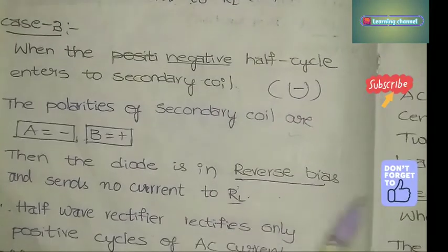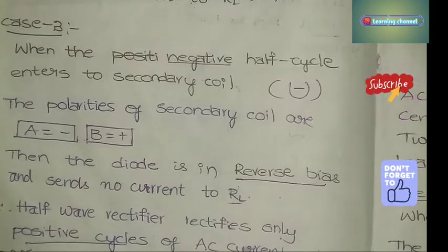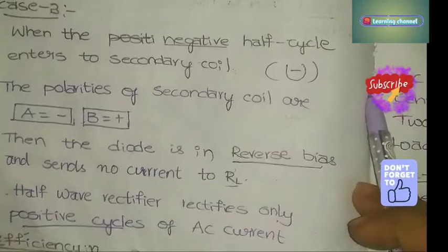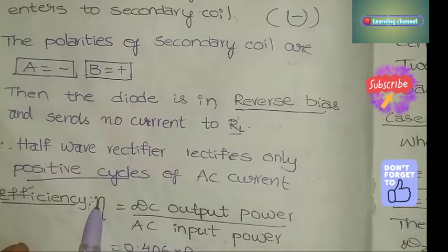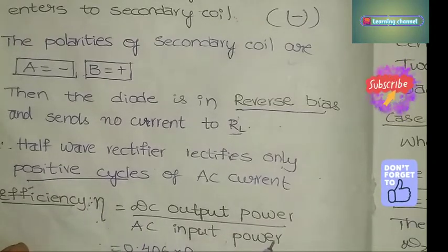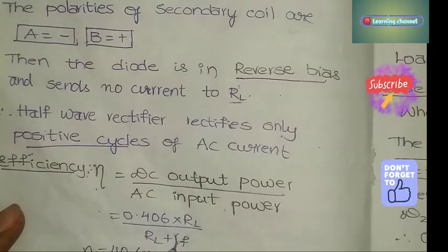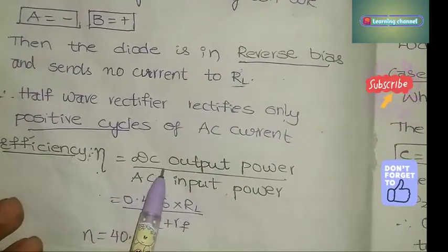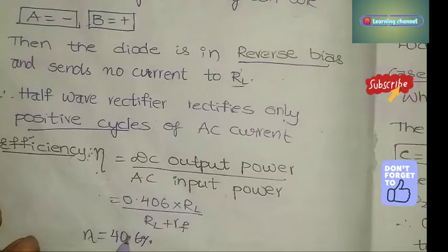Conclusion: The half-wave rectifier rectifies only the positive cycles of the AC current. Regarding efficiency: efficiency is represented by eta (η) and is given by DC output power divided by AC input power. The formula is η = 0.406 × RL / (RL + RF), where RF is the internal resistance. The efficiency of a half-wave rectifier is 40.6 percent.